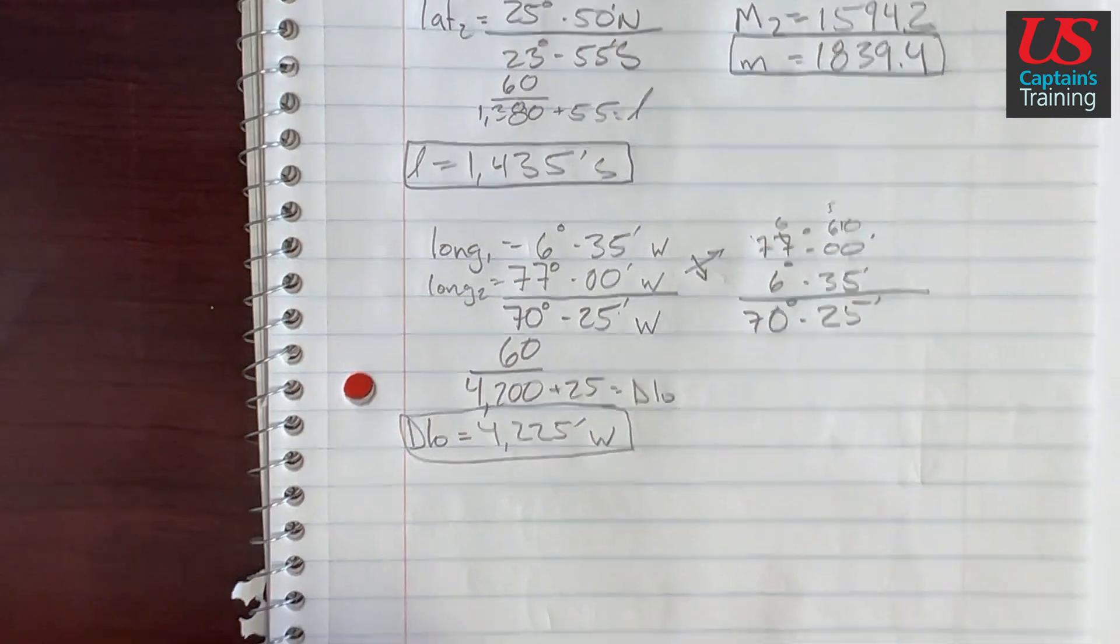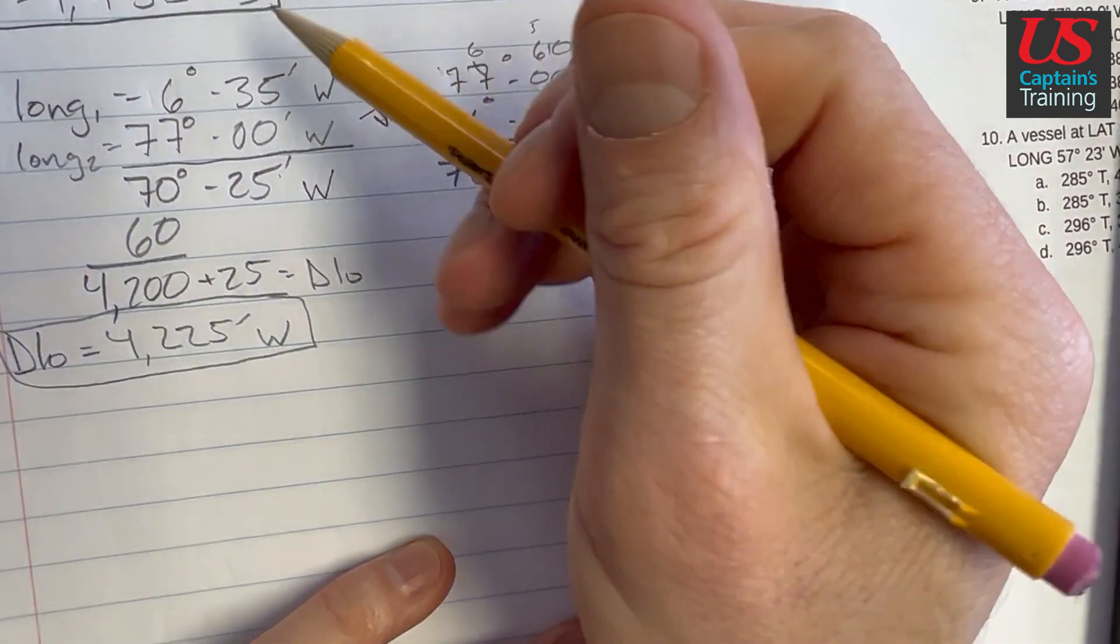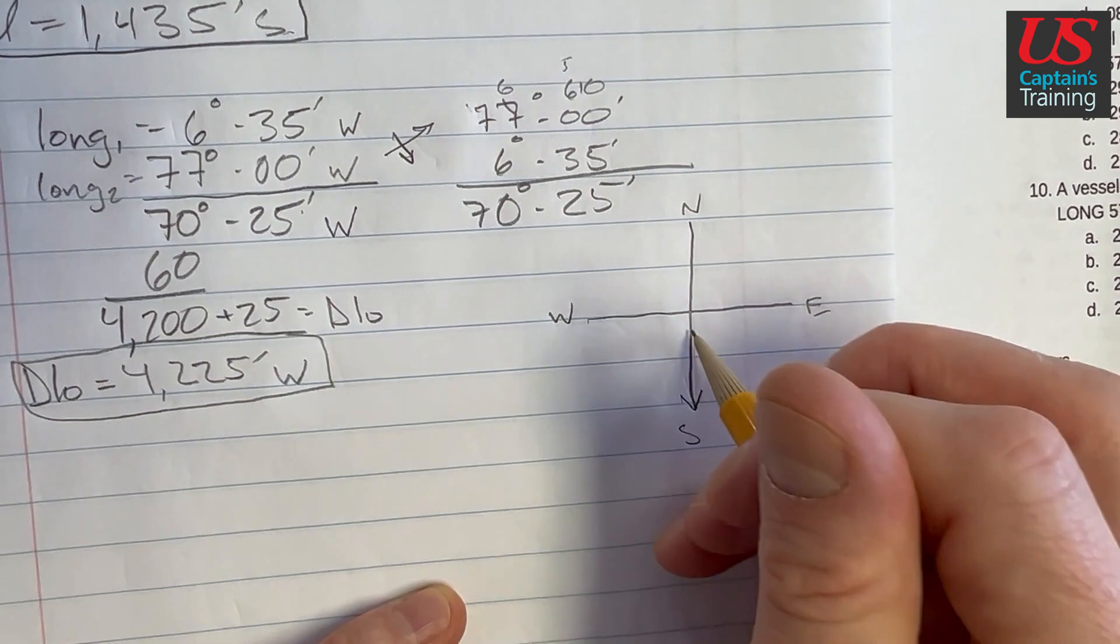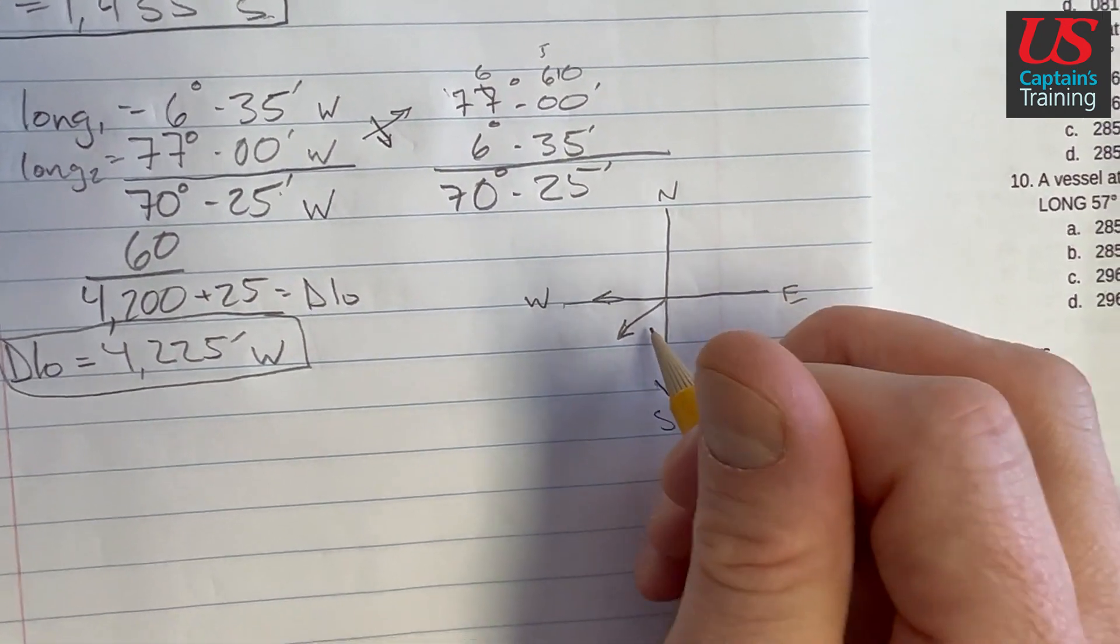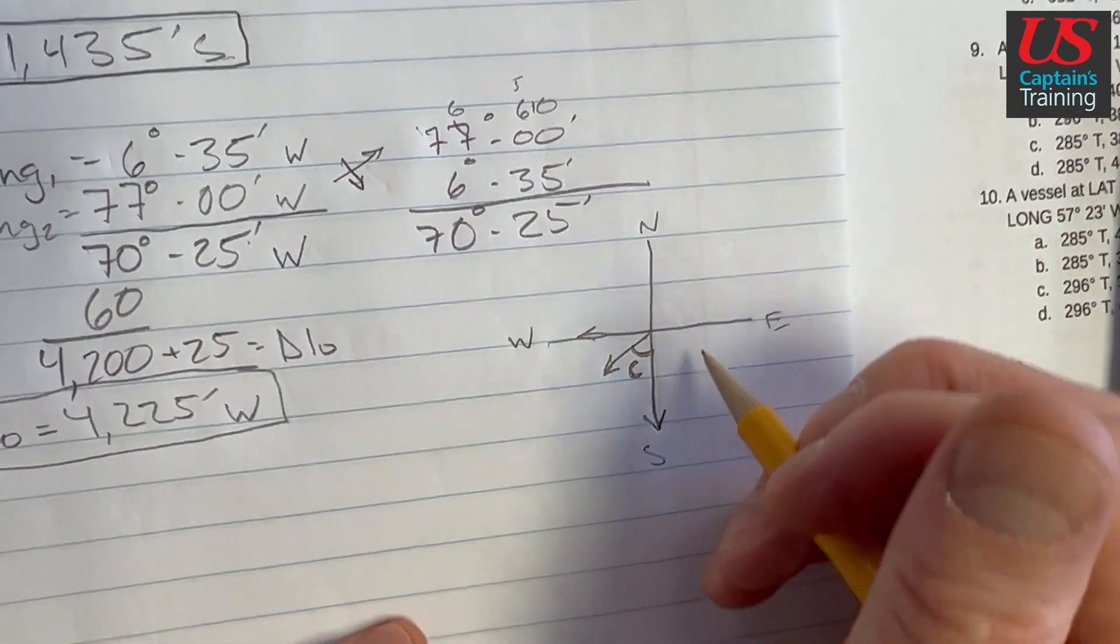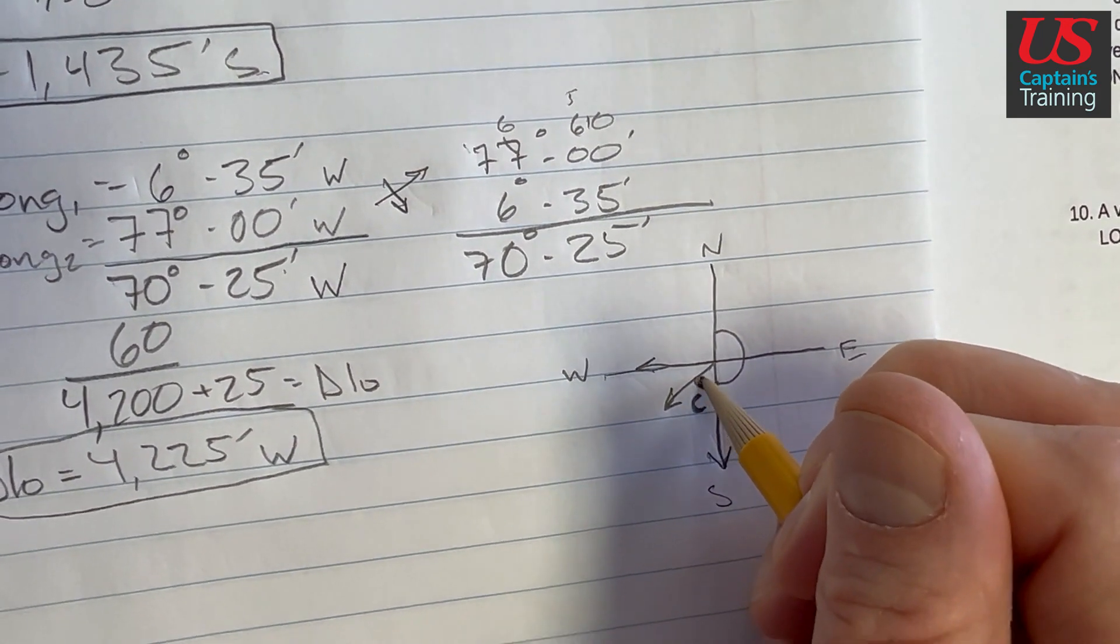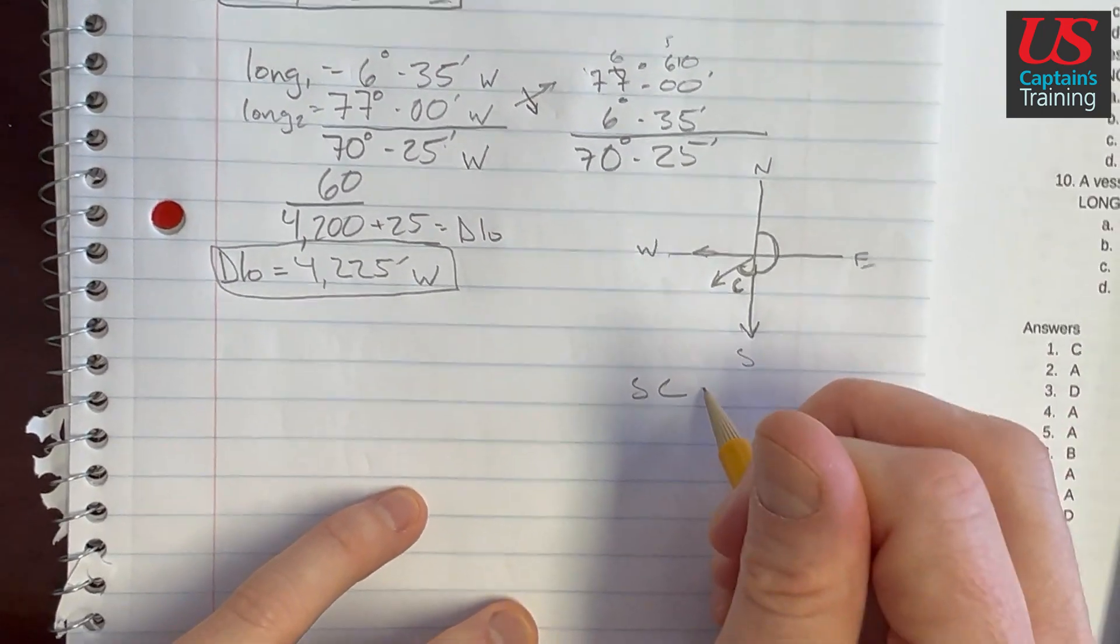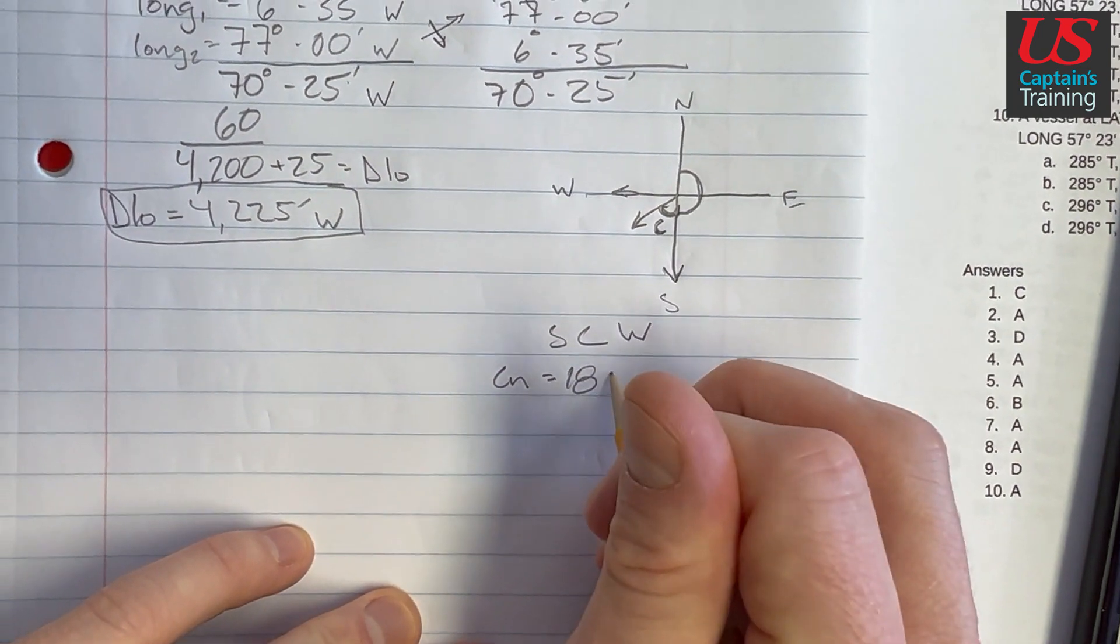Now let's figure out what quadrant our course is in. Put it in quadrantal notation. So we went south in L. So we're going south, right? South, north, east, west. We went south, and we also went west. So we're going to be over here in this quadrant. And this angle here, when we figure out C, it's going to be this angle. But the question is going to ask for CN, which is this angle all the way from north and including that. So we'll have this 180 plus our C. We'll have south, course, west equals CN. So CN will equal this 180 plus our course.